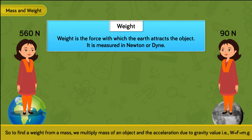To find weight from mass, we multiply the mass of an object by the acceleration due to gravity value, i.e. W is equal to F is equal to M into G.